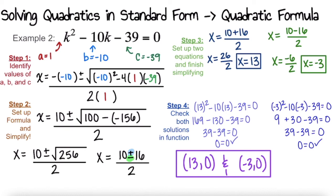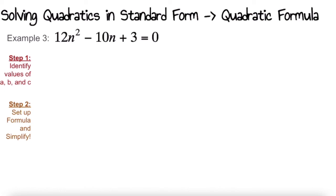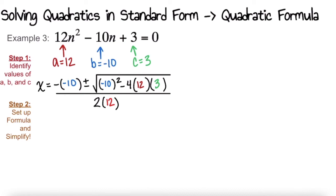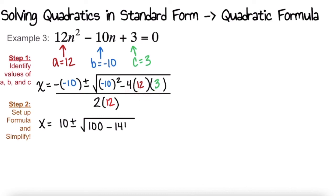Let's go to our final example. Again, we start by finding the values of a, b, and c. For this example, a is 12, b is negative 10, and c is 3. Time to plug into the quadratic formula — try it now. You should have x equals negative negative 10 plus or minus the square root of negative 10 squared minus 4 times 12 times 3, all over 2 times 12. Simplifying: positive 10 plus or minus the square root of 100 minus 4 times 12 is 48, and 48 times 3 is 144, all over 2 times 12, which is 24.